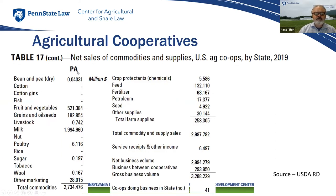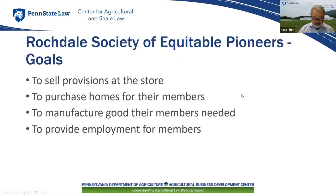Looking at Pennsylvania data in terms of the amount of sales by commodity marketed through cooperatives: milk, and fruits and vegetables — likely apples and grapes — are prominent. The total number of agricultural cooperatives in Pennsylvania is 41.